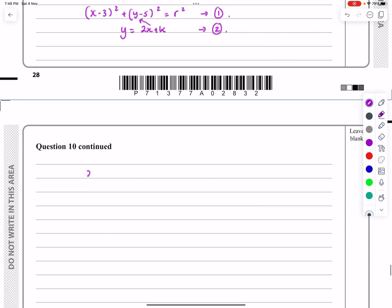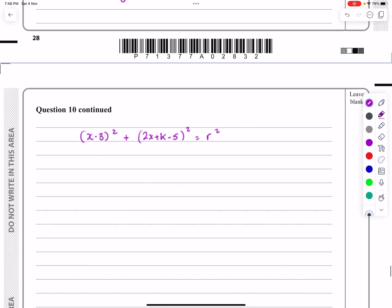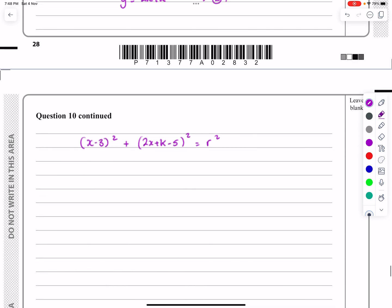Well, the easiest way to do that then is to substitute 2x + k in for that y there. So let's go ahead and do that. I've got (x - 3)² + (2x + k - 5)² is going to be equal to r². So if I'm going to multiply this out, (x - 3)² is (x - 3) times (x - 3). You take your time and do it. I've already done it.